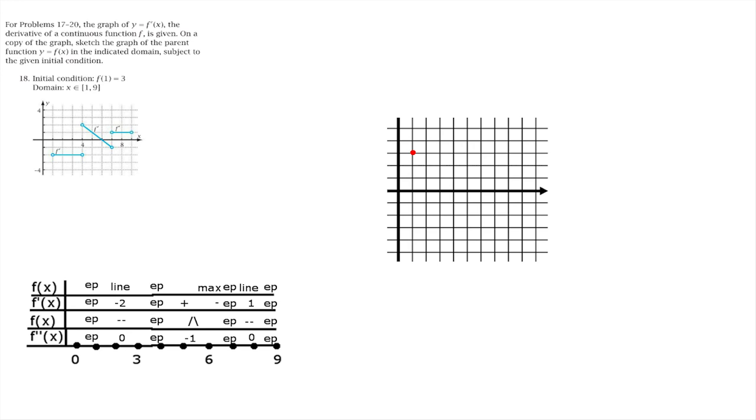Now we draw a line with a slope of negative 2 for the interval of x 1 to 4, then a concave down parabola with a max at 6, and then the line with slope of positive 1 until we reach x equals 9.